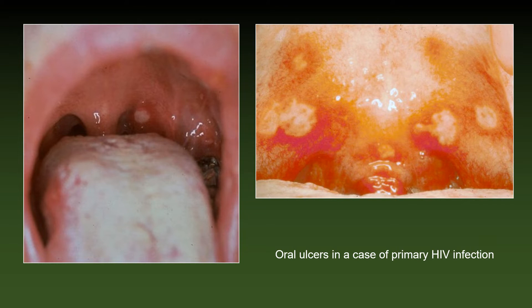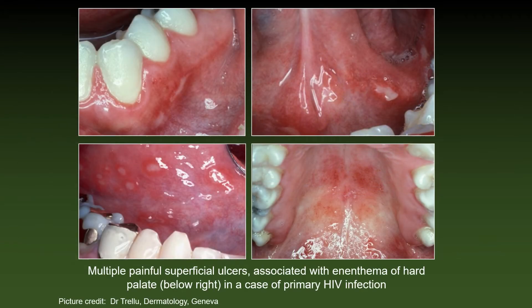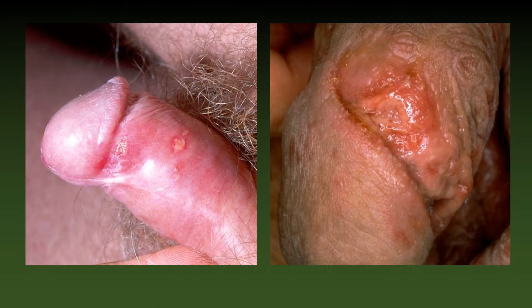PHI involves the GI tract starting with ulcers in the oral cavity. In this case, there were multiple painful superficial ulcers associated with enanthema of the hard palate in a case of primary HIV infection. Two painful genital ulcers were also observed during primary HIV infection. The pain distinguishes these ulcers from syphilis, because the syphilitic chancre is usually painless.